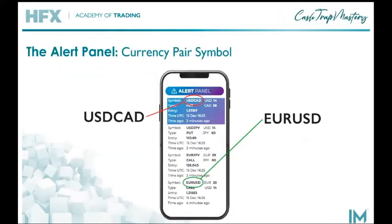One of the new features you will find within Cash Trap 2.0 is a new alert panel. It's important to understand the information that you will find within each market idea. First is the currency symbol. As you can see in this example, we have USDCAD. This stands for US dollar to Canadian dollar. Each currency is then measured with a given strength indicated by a number to the right that we'll cover in a minute. So with each separate market idea, you will have a separate currency symbol, and to view any of these, simply click on that symbol and it will take you to that particular market idea.